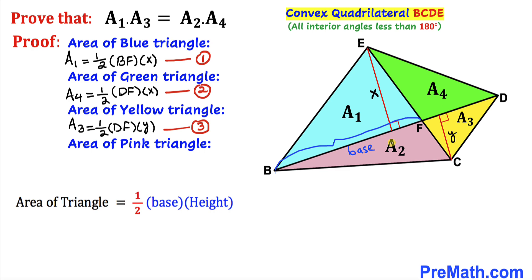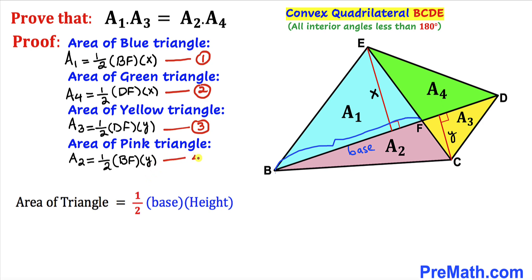Finally, let's calculate the area of this pink triangle whose base is BF and whose height is Y. As you can see, A sub 2 equals one half times BF times Y. Let's call this equation number four.